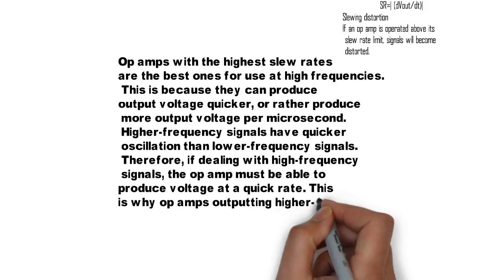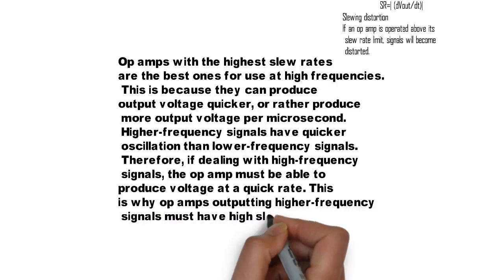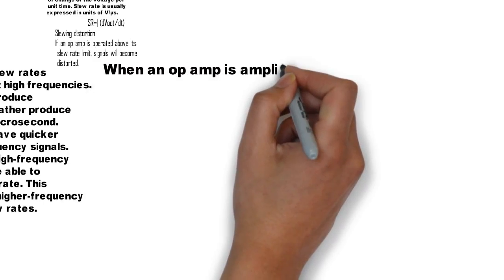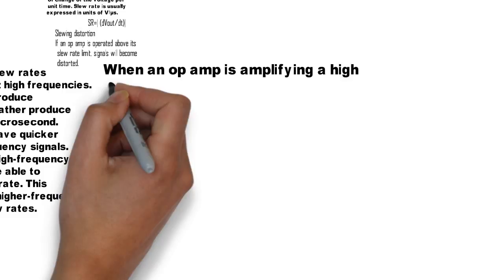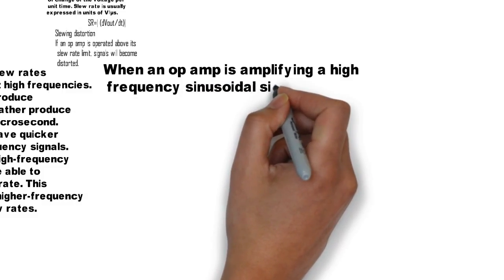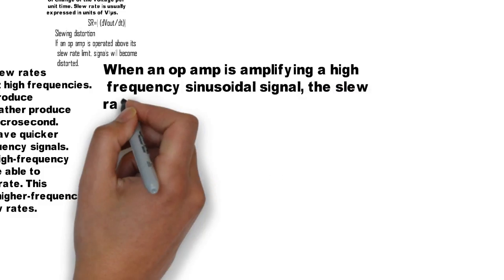This is why op-amps outputting higher frequency signals must have high slew rates. When an op-amp is amplifying a high frequency sinusoidal signal, the slew rate can be exceeded.